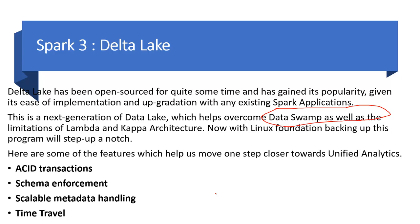The streaming and batch APIs in Spark 3 are much more unified. The properties being brought in from Delta Lake include ACID transactions, schema enforcement, and scalable metadata handling. This last point is very important — Delta Lake acknowledges that metadata itself can grow to huge volumes, and it treats metadata with the same approach as regular big data, applying a similar scalable handling strategy.